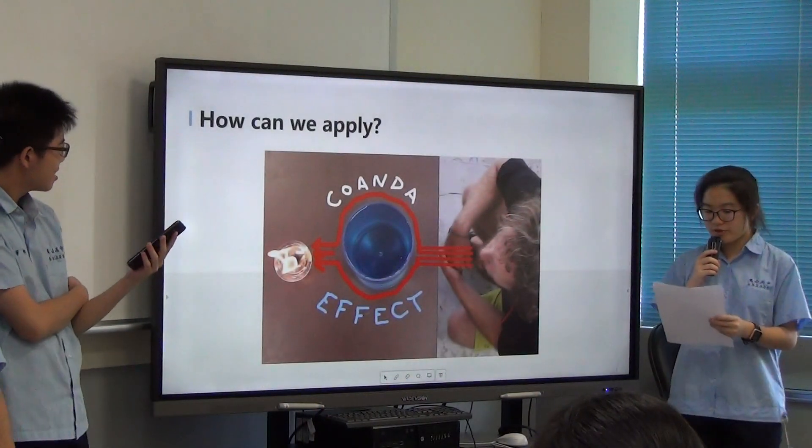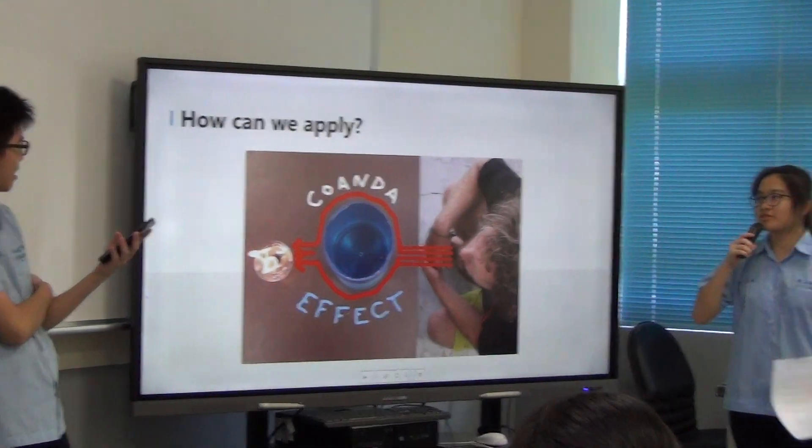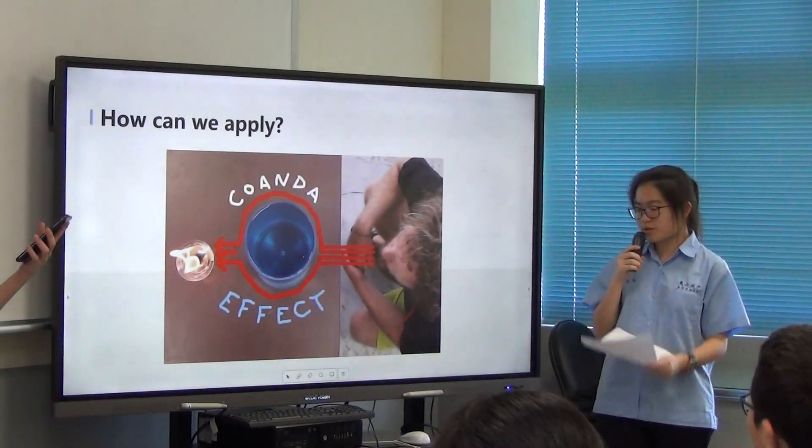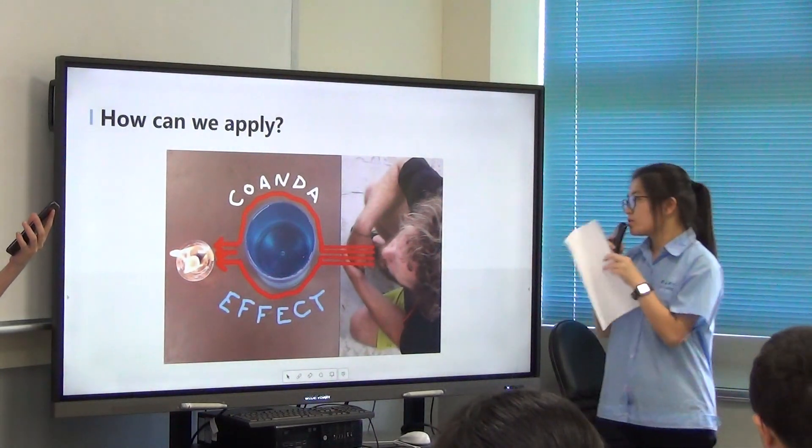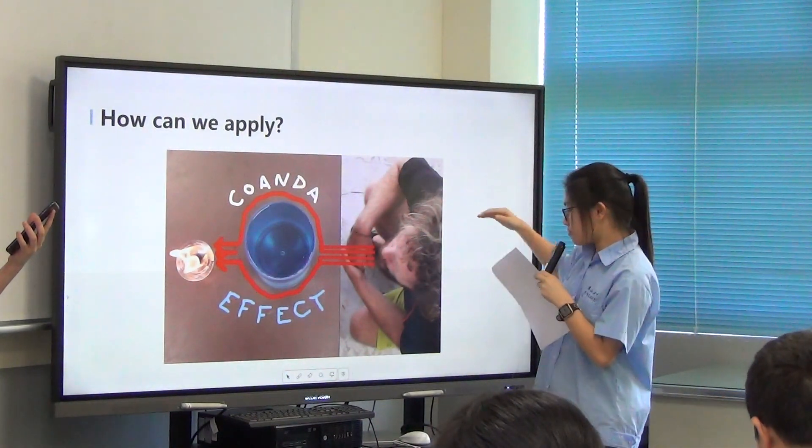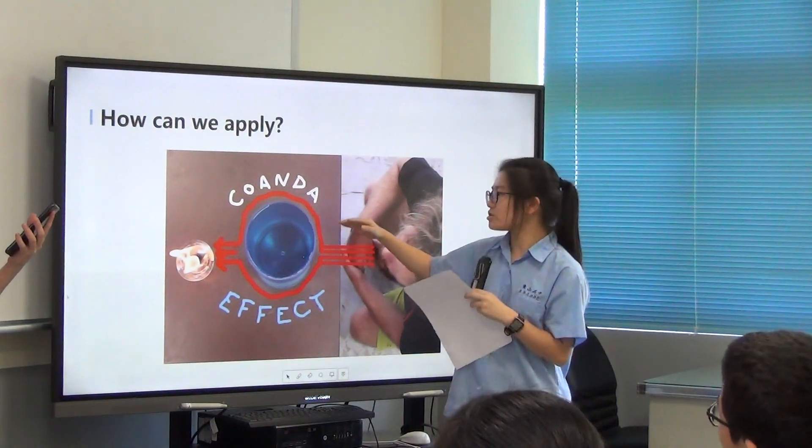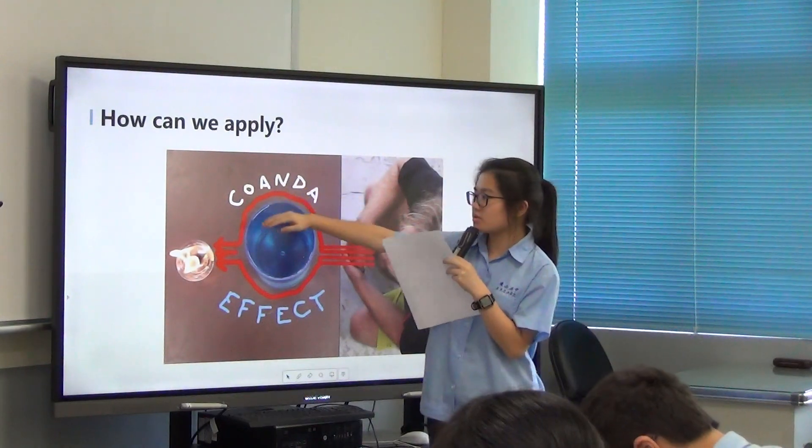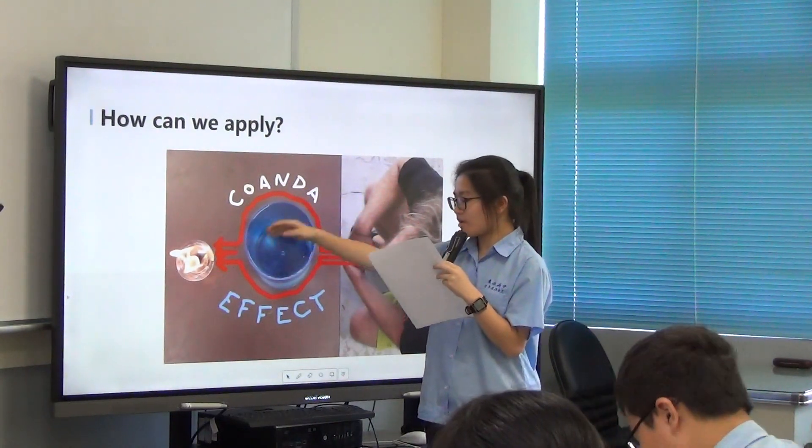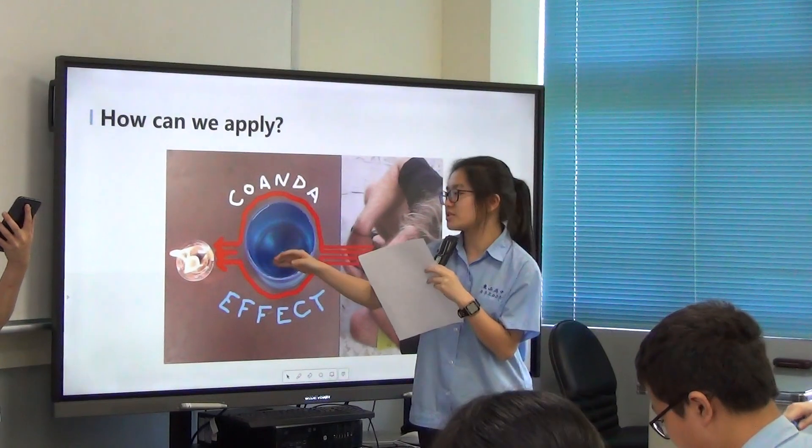So before talking about what we have done, first let me introduce how the second experiment is done. When the wind that we blow meets the obstacle, according to Coanda effect, the air will flow along the convex surface and converge at the back of the object and continue the flow.